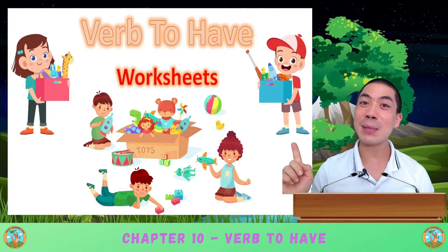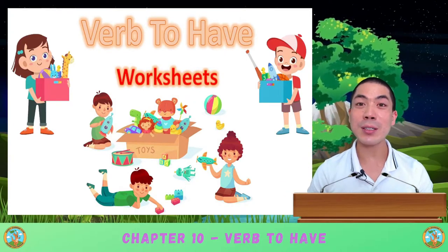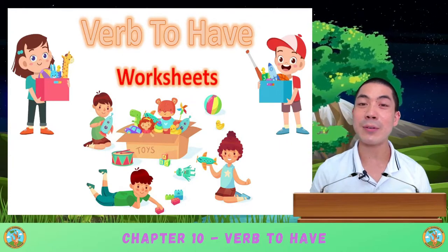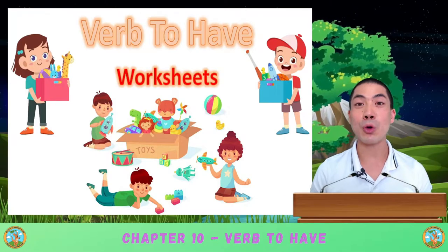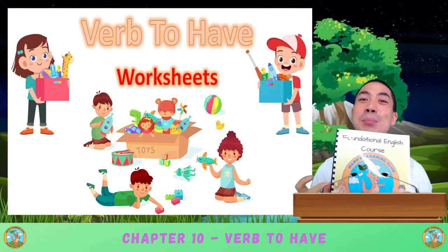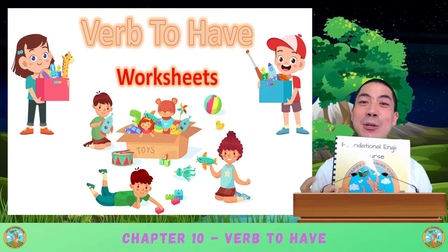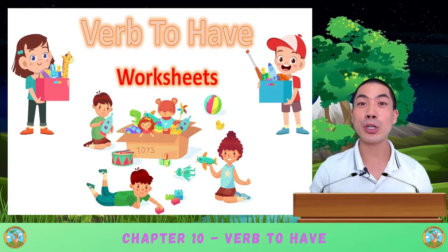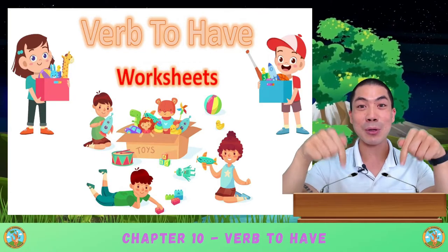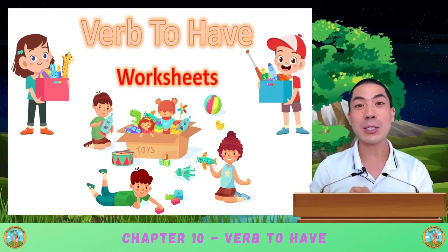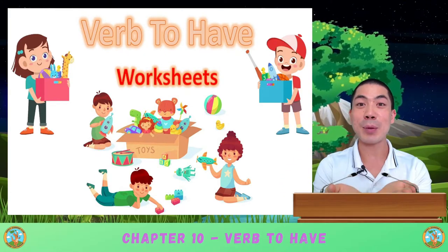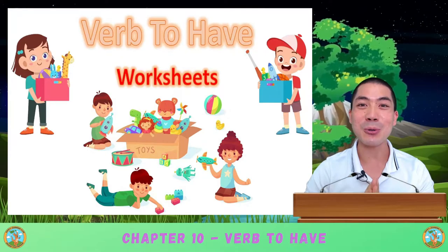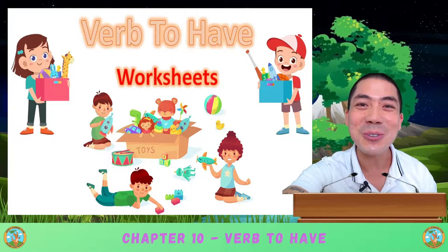In today's class, we are doing some worksheets practice for the chapter of verb to have. If you have your workbooks ready, please take it out and go to page 55, or you can download the worksheets in the links below, or just use a blank piece of paper and write along as we go. Are you ready? Let's go!